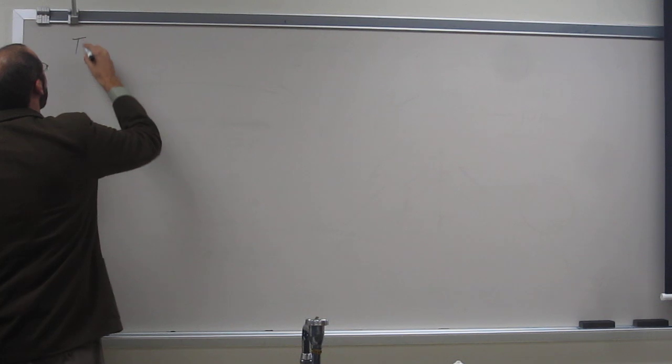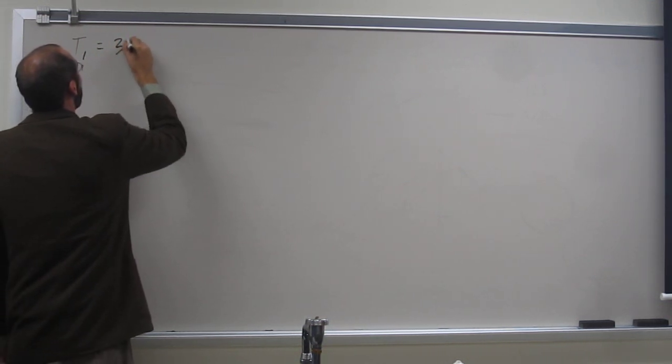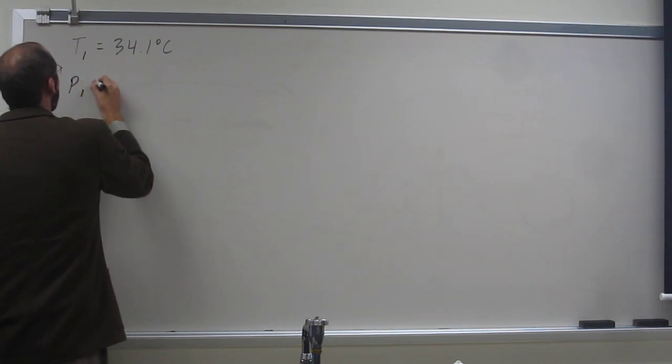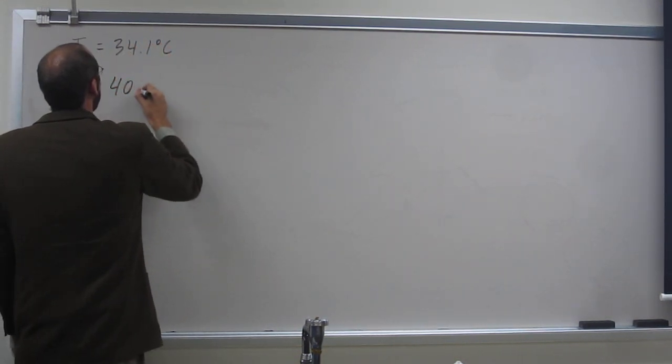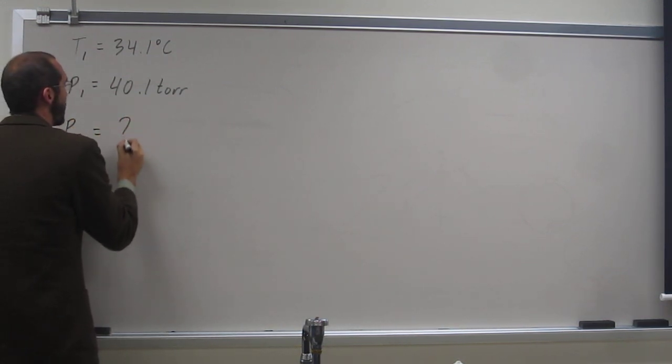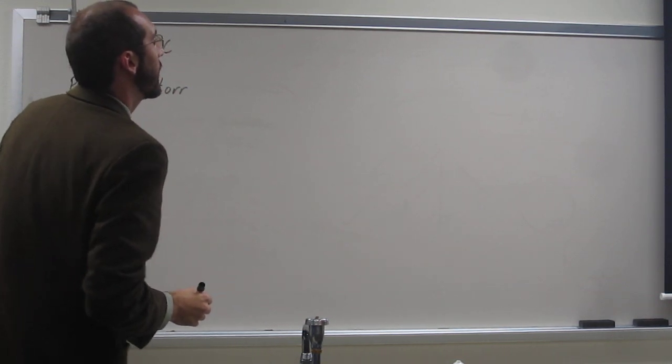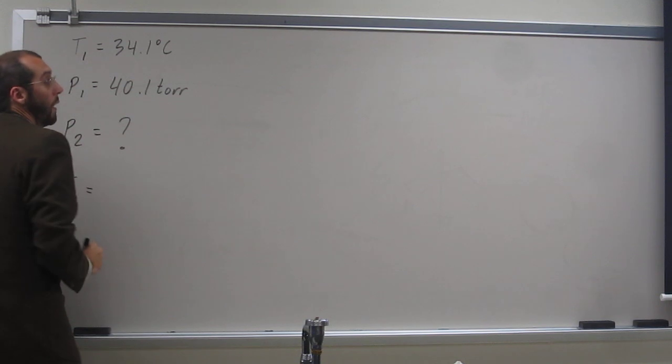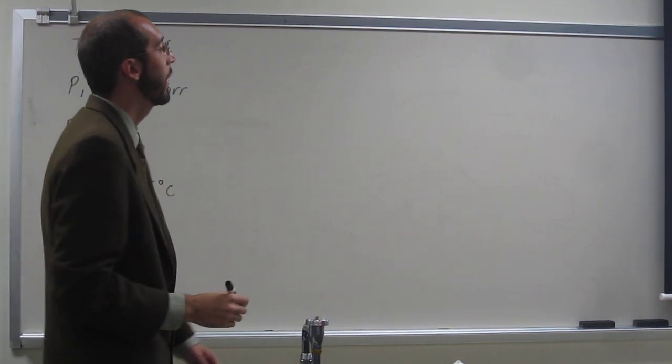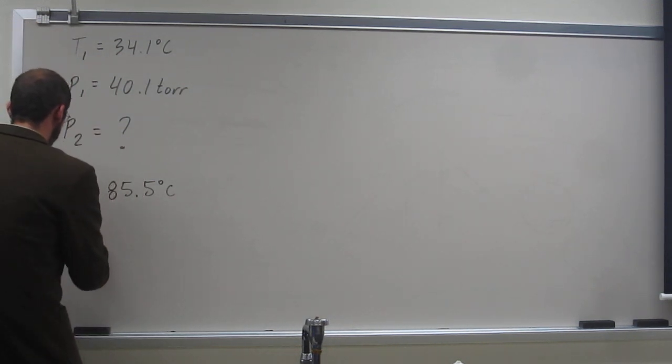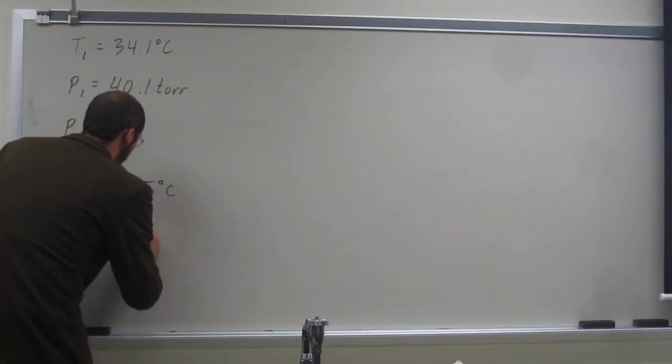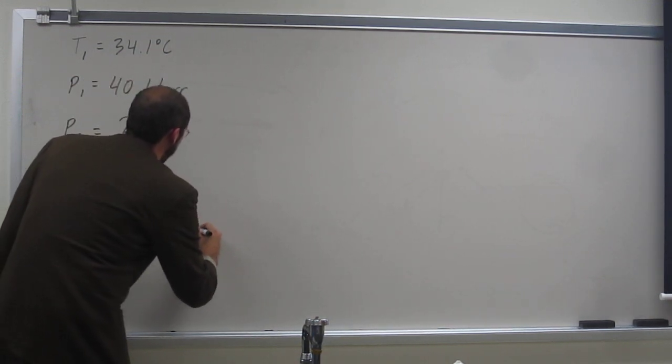So T1 is 34.1 degrees Celsius. So P2, that's what we're looking for, okay? And it gives us T2, 85.5 degrees Celsius. And it also gives us delta H-vap of water at 40.7 kilojoules per mole.